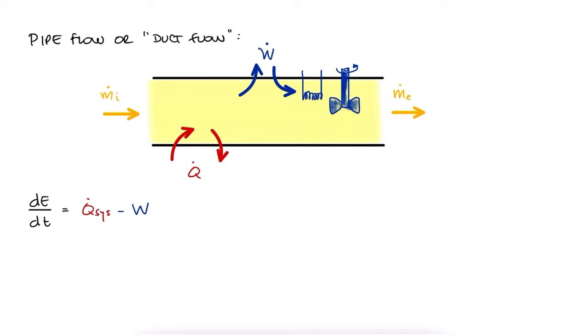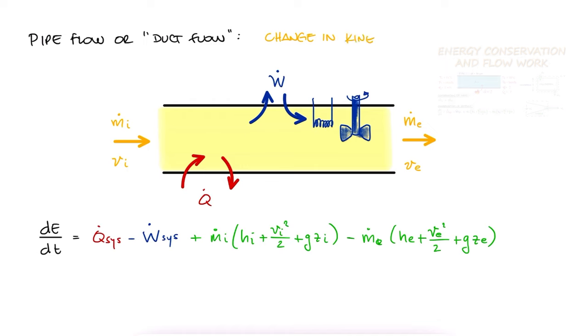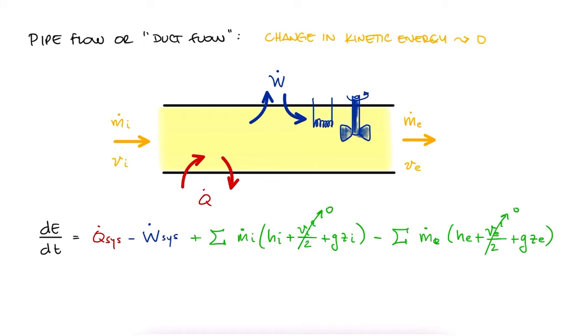As demonstrated by our calculations in the previous 11-minute lecture on flow work, linked below, the changes in kinetic energy are typically negligible, and as seen in one of the example videos for that lecture, also linked below, the changes in height, if any, are also usually negligible.